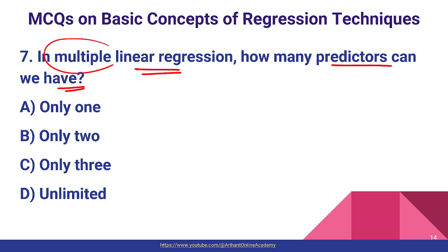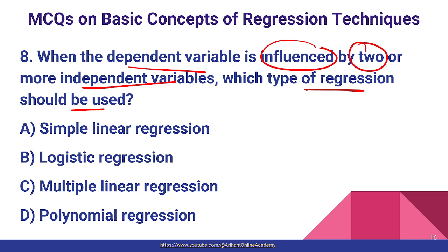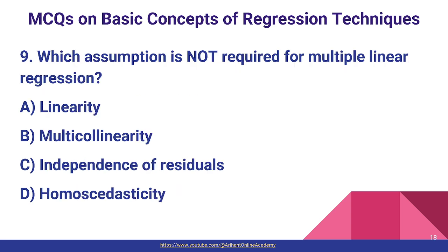Question number seven: in multiple linear regression, how many predictors can we have? By default it is multiple, so there is no limit — unlimited. Question number eight: when the dependent variable is influenced by two or more independent variables, which type of regression should be used? Since it involves two or more independent variables, multiple linear regression is used — option C is the correct answer.